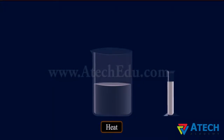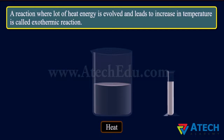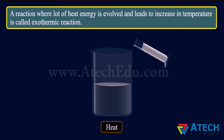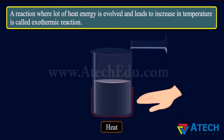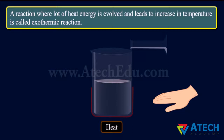A reaction where a lot of heat energy is evolved, leading to an increase in temperature, is called an exothermic reaction. When 10 ml of hydrochloric acid is poured in water slowly, the sides of the beaker get warmer. Similarly, when a solution of sodium hydroxide is added to water, heat energy is evolved. Mixing an acid or base with water results in a decrease in the concentration of ions per unit volume — this is called dilution. We do not add water to acids or bases, as it can be highly exothermic, leading to splashing of liquid or accidents.